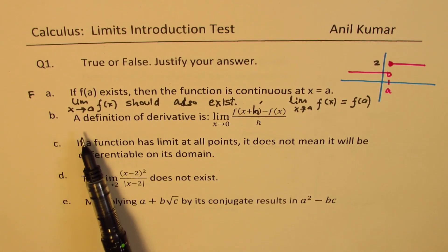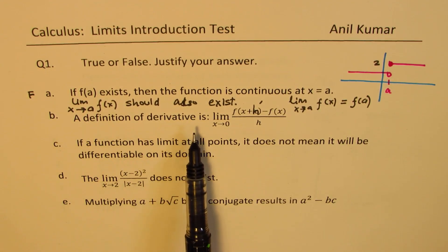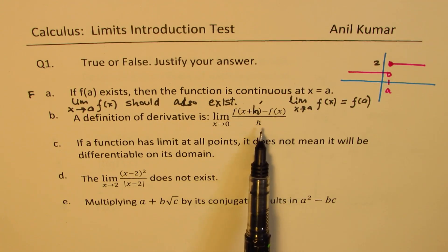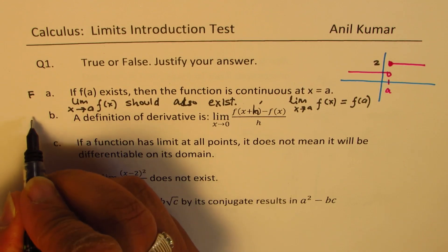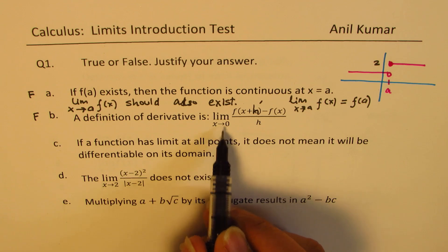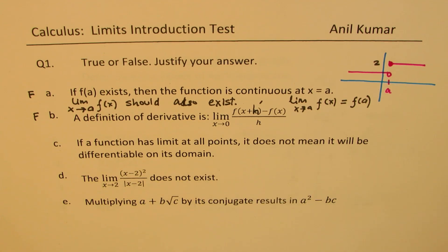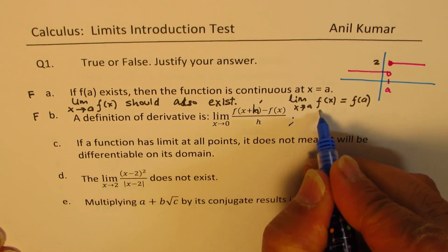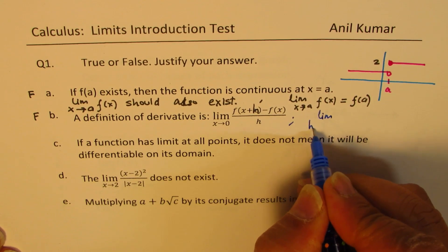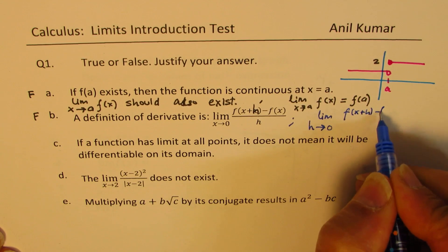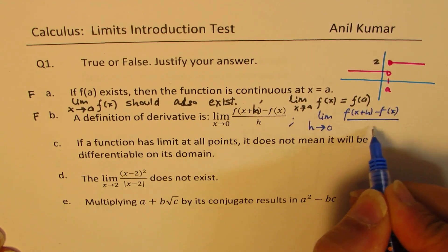B: A definition of derivative is limit x approaches 0 for f of x plus h minus f of x over h. This statement is also false, since it is not x approaches 0 — it is h approaching 0. So it should have been limit h approaching 0 for f of x plus h minus f of x over h.